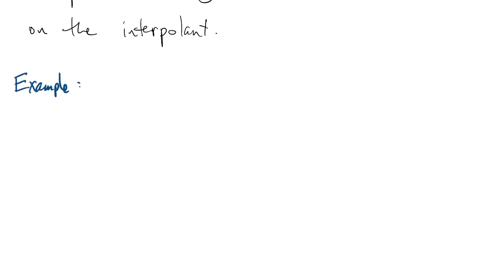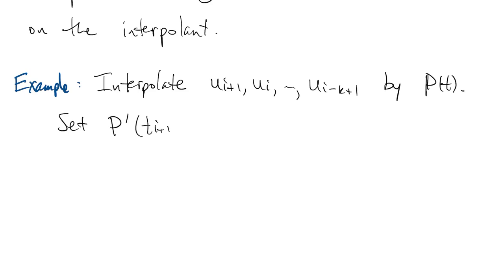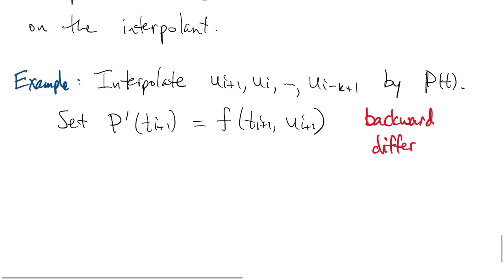One way we might use this, for example, is to interpolate the values of u, ui plus 1, ui, going on back, by a polynomial p of t. And then we will set p prime at ti plus 1 equal to f at time i plus 1, which is what the exact solution would satisfy. When you work this out, the resulting method is called a backward differentiation or a backward difference method.